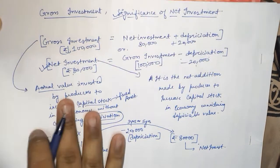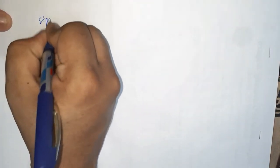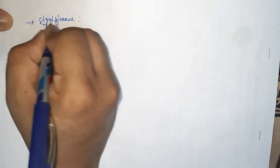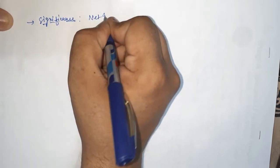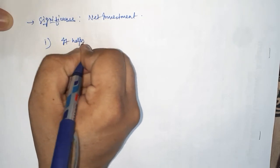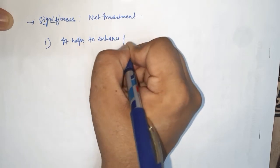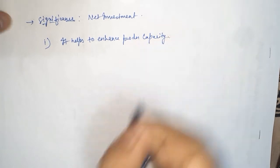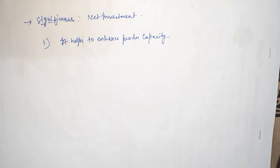The next thing to study is the significance of net investment. There are three important points of significance. The first significance of net investment is that it helps to enhance production capacity. Simply, when you increase net investment, you are adding more to the capital stock of the economy — more capital goods are purchased, more fixed assets and more machines are there. So if more machines are there, there is more production. But for running the machine, labor is also required because no business can survive without labor.